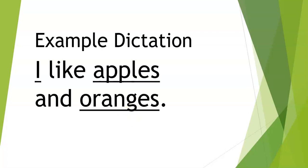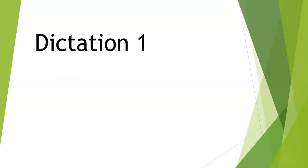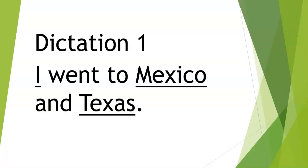Now we are going to do dictation number one. I went to Mexico and Texas. So: I went to Mexico and Texas. I, Mexico and Texas are the nouns. Mexico and Texas are places, and I is a person — I'm talking about myself.